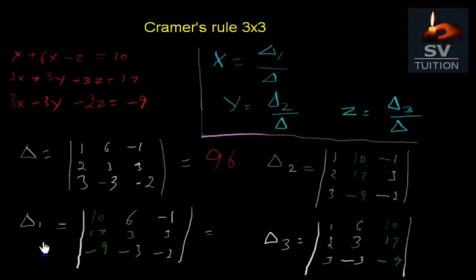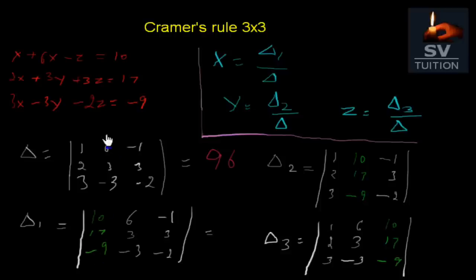Now delta 1's value will be a little different from delta. We will just change the values 1, 2, 3 with the constant values 10, 17, minus 9. The first column will be replaced with 10, 17, minus 9. The second column and third column of delta 1 will be the same as delta. And the value of this determinant will be 96.